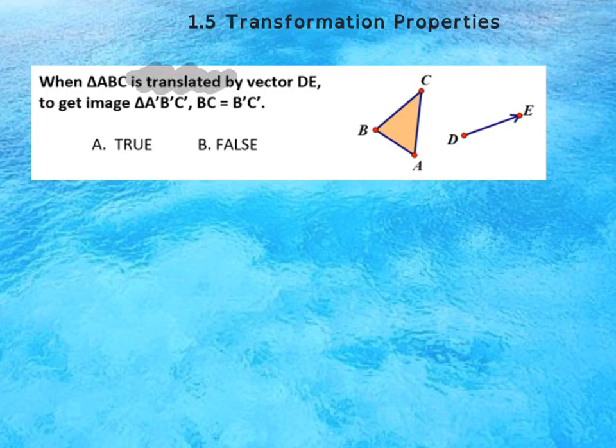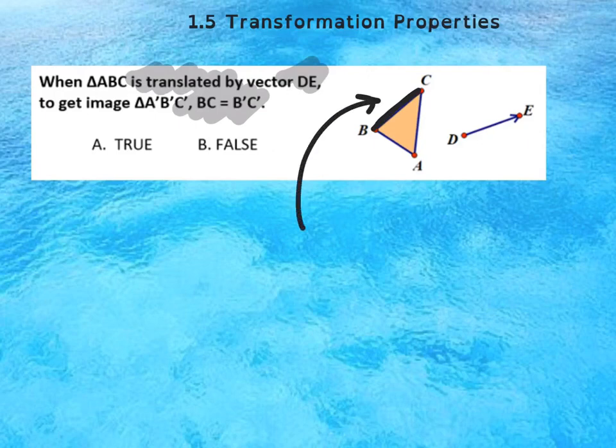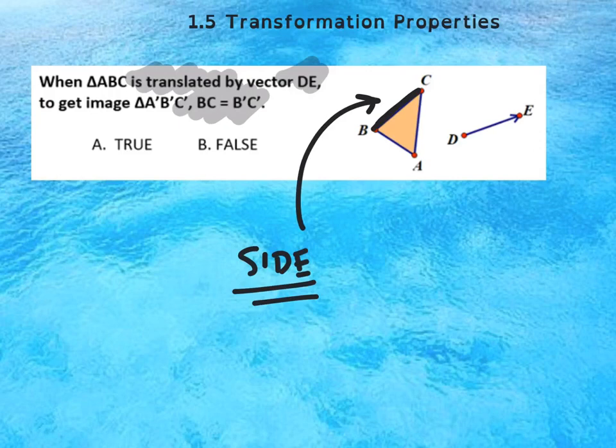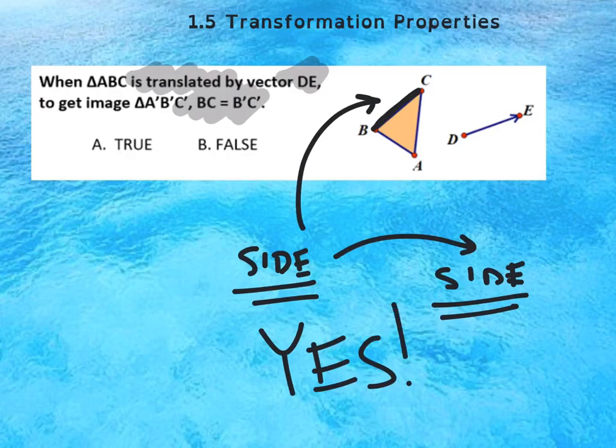First of all it says we're doing a translation by a vector and they want to tell us that BC will always be the same as B'C'. Let's look at what that actually means. BC is actually a side, isn't it? So it's really asking will the side of the original be the same as the side distance of its image?